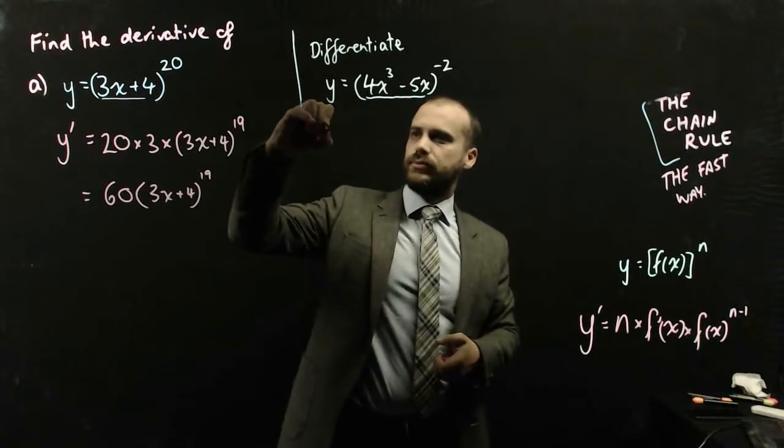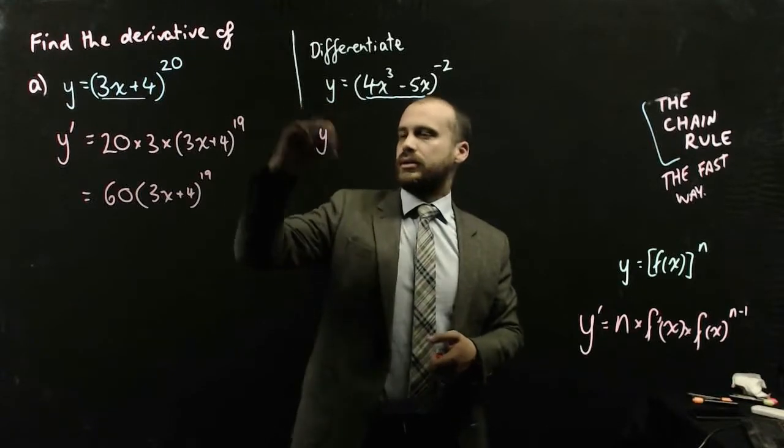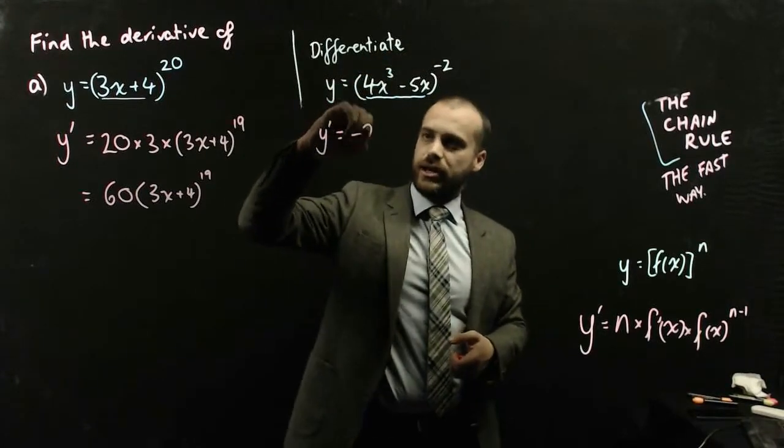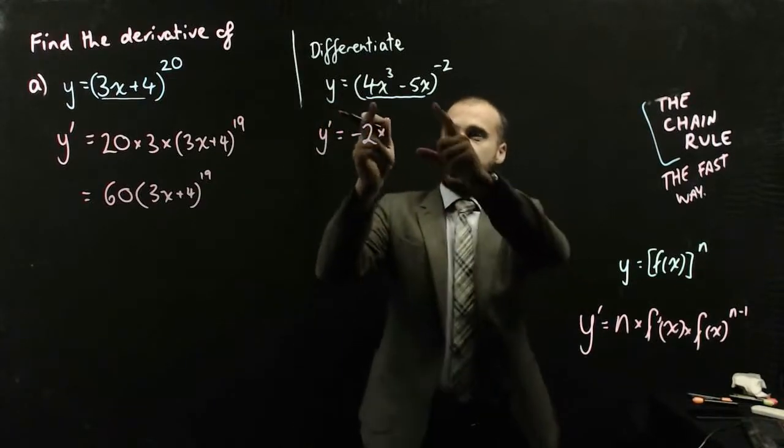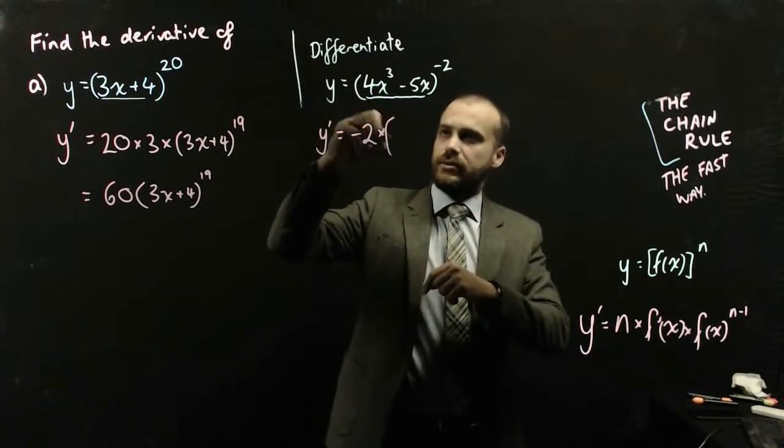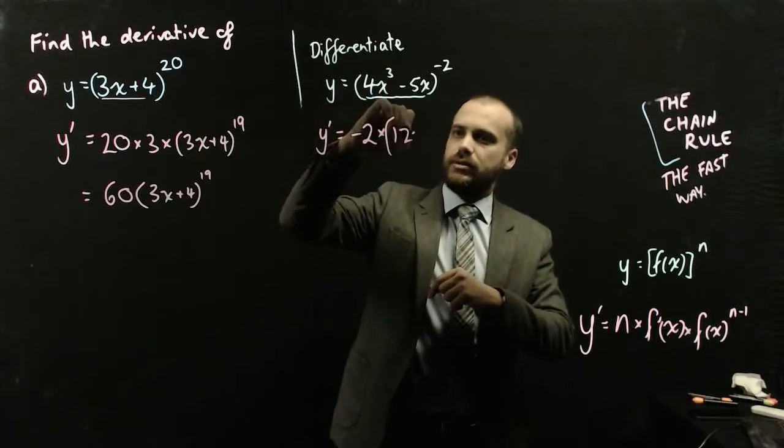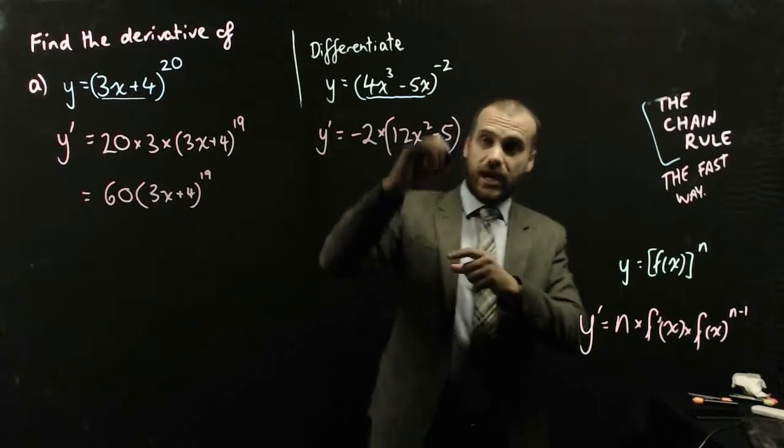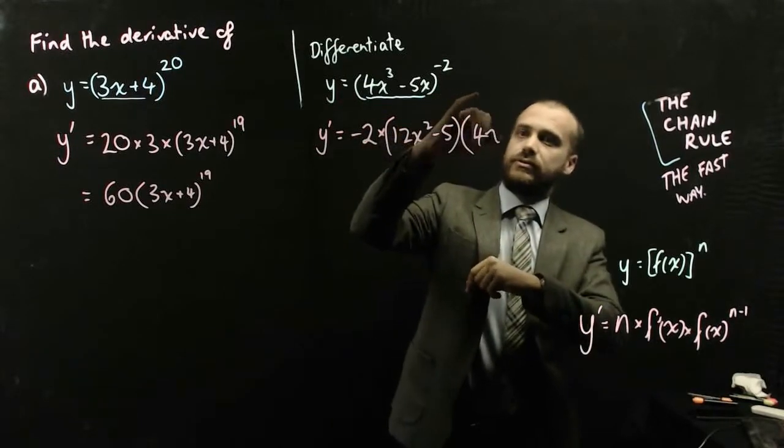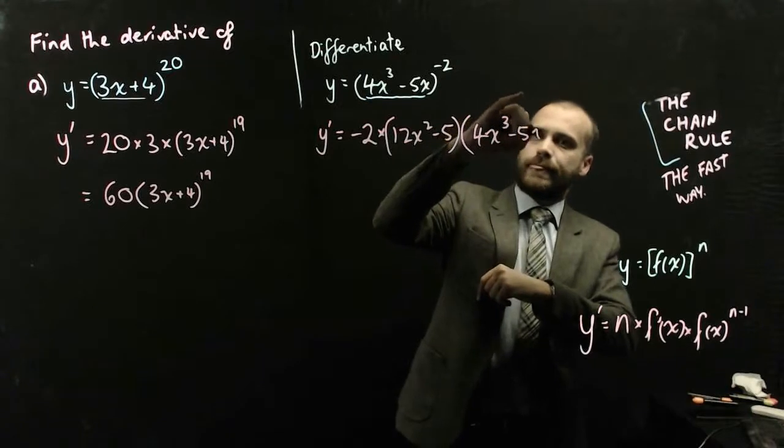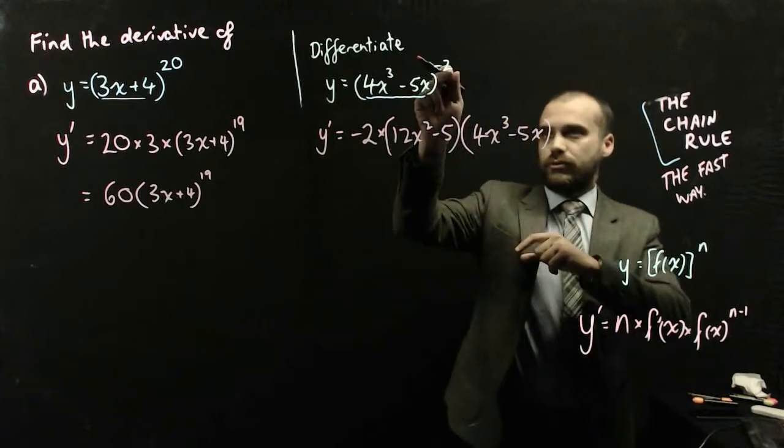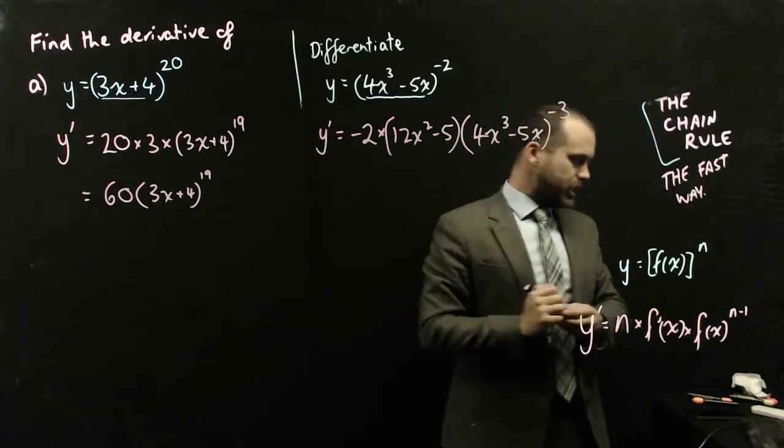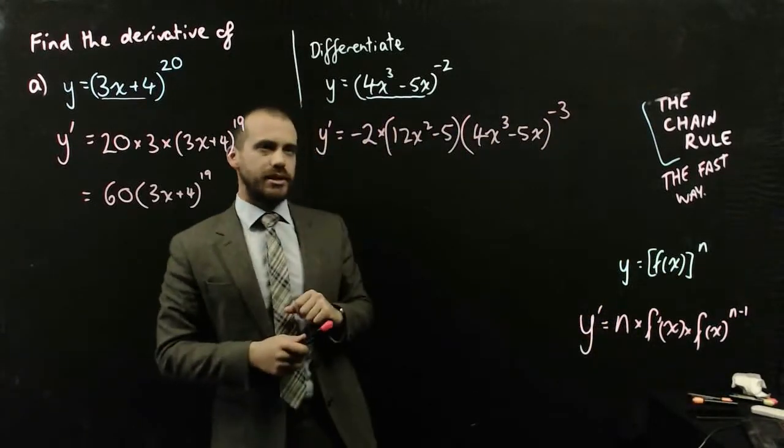This one, so y dash equals, bring the power out the front, negative 2, multiply it by the derivative of that, which is going to be 12x squared minus 5, multiply that by the function itself, and then decrease the power by 1. That looks like it's probably the answer.